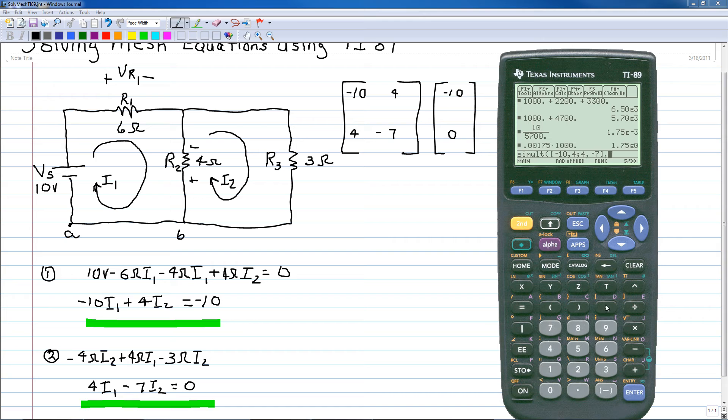Now a comma, open brace, open bracket, and then now the constants. The first one was -10. Now we want a semicolon and the second one, which is 0. And now we'll close that bracket and we'll close that parenthesis. And now enter.